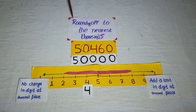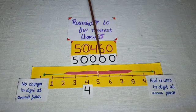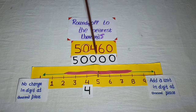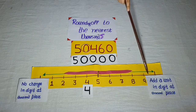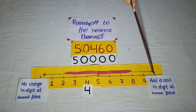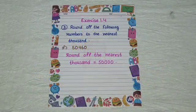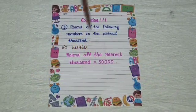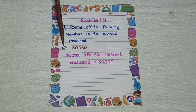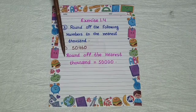There is a simple way of rounding off. If you want to round to the nearest thousand, put three zeros to the right and look at the hundreds digit. If it is 5 to 9, add a unit to the thousandths digit. Students, write the third statement in your notebook like this and solve the sum 50,460.